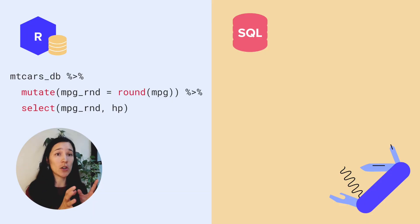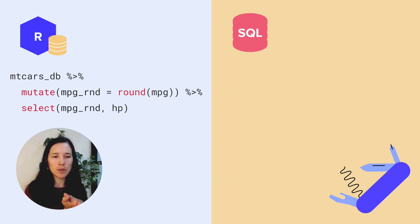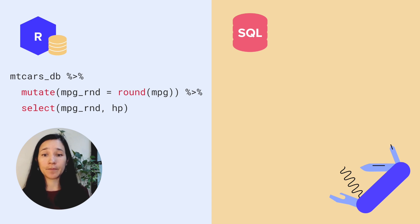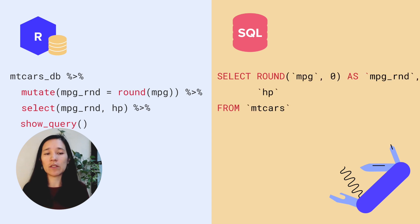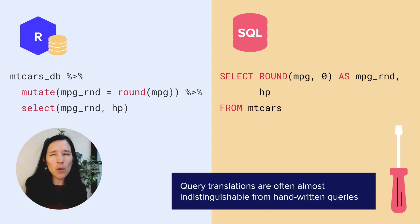If we look at how this works — let's take a simple R example where I have an empty cars table in a database. I take some variable miles per gallon, round it, create a new variable, and then select two other variables: the rounded miles per gallon and horsepower. If I look at the translation, it also looks fairly good — somewhat similar to the R code. I'm rounding it, I get the horsepower from the mtcars table. If I'd written this out by hand, I probably wouldn't write in the backticks, but otherwise it looks almost the same.